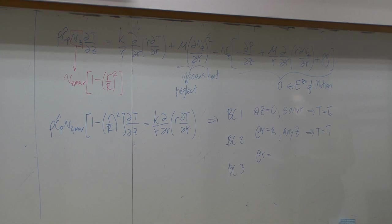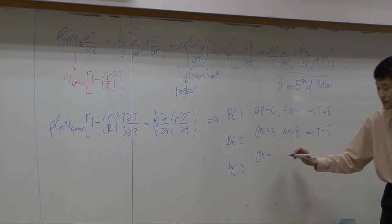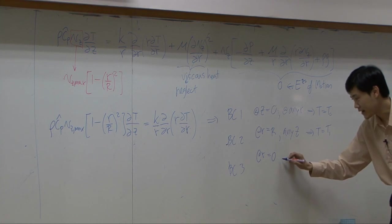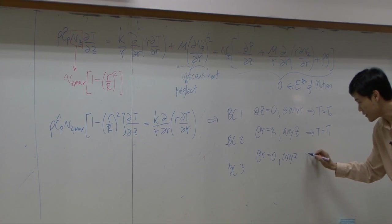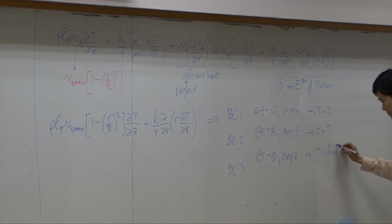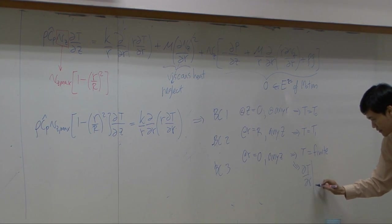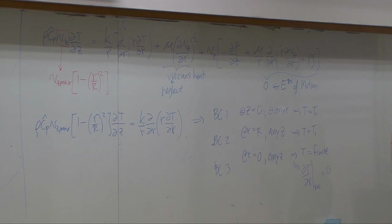What else? At r equal to zero, what is boundary condition? T is equal to finite. T is equal to finite, any z. You may have t equal to finite or dt by dr equal to zero, because temperature profile supposed to have inflection point right in the center.